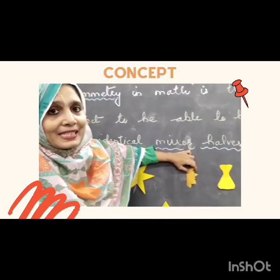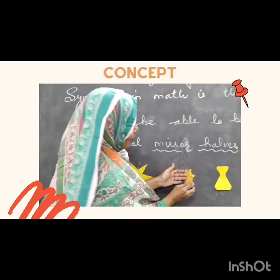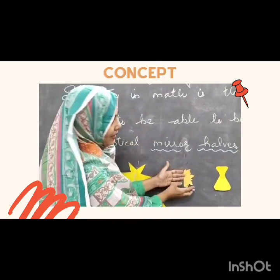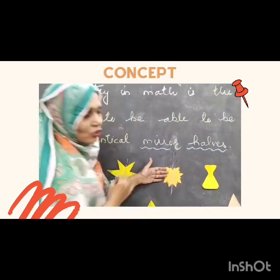This is a flat. When we fold the flat, it is all over each other. This line is called an axis of symmetry.